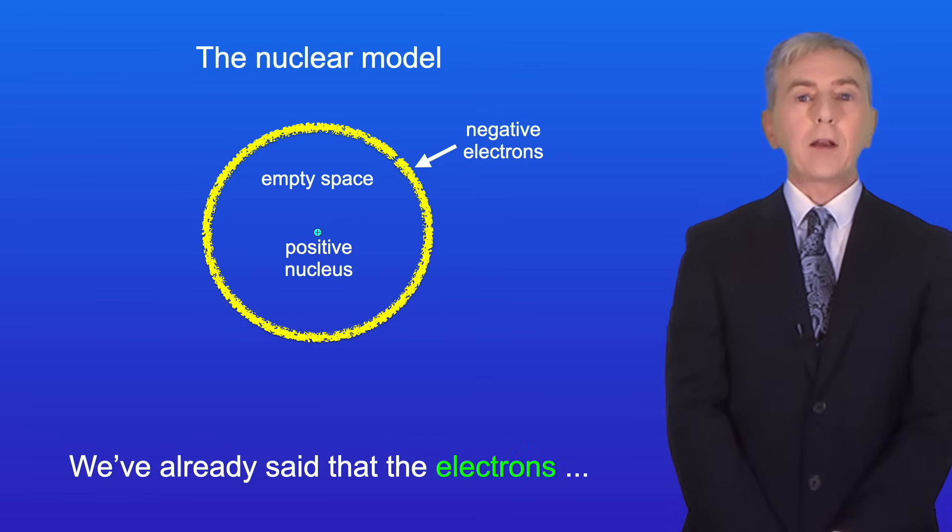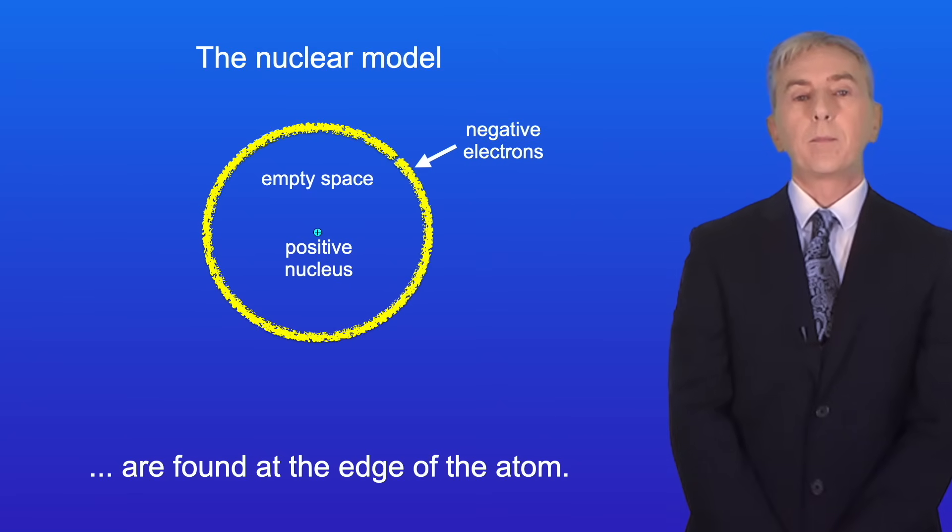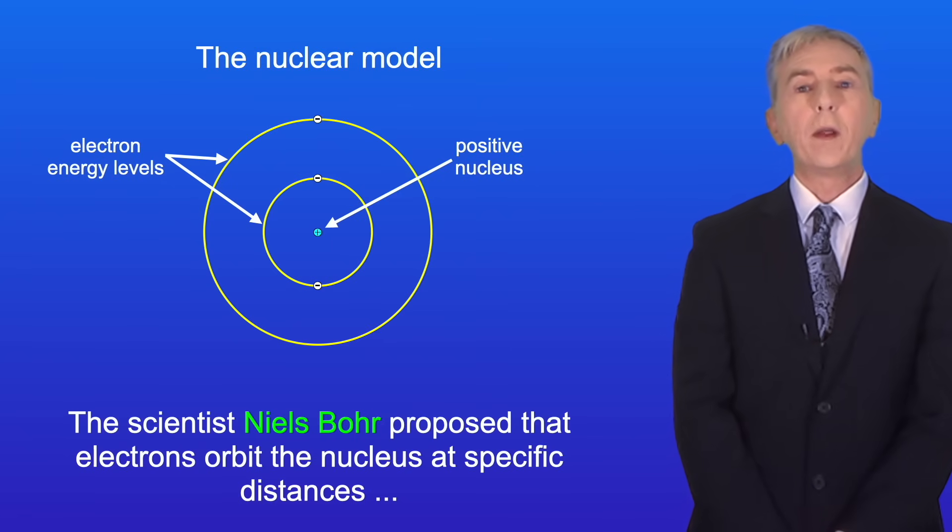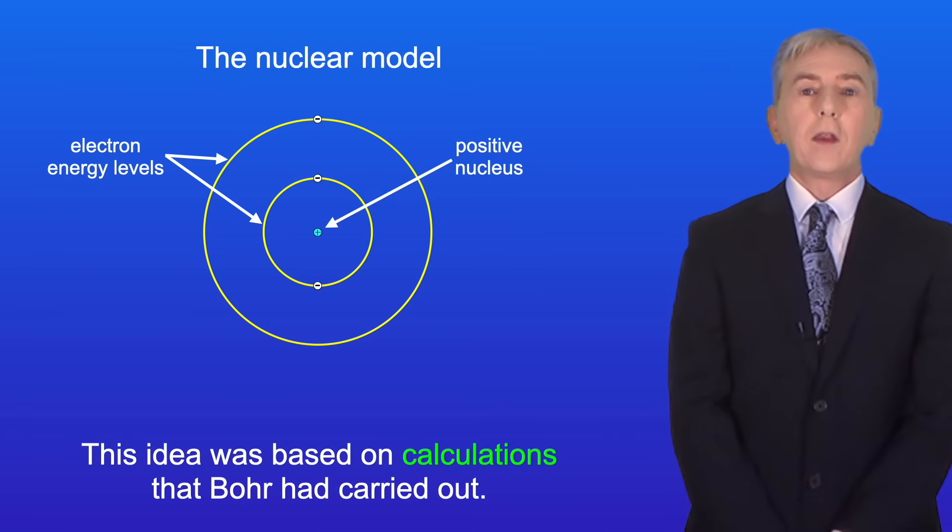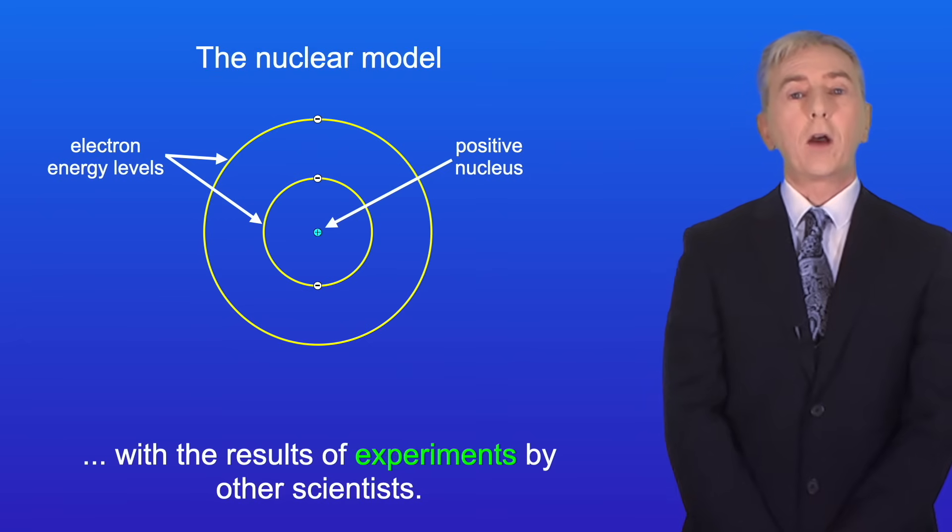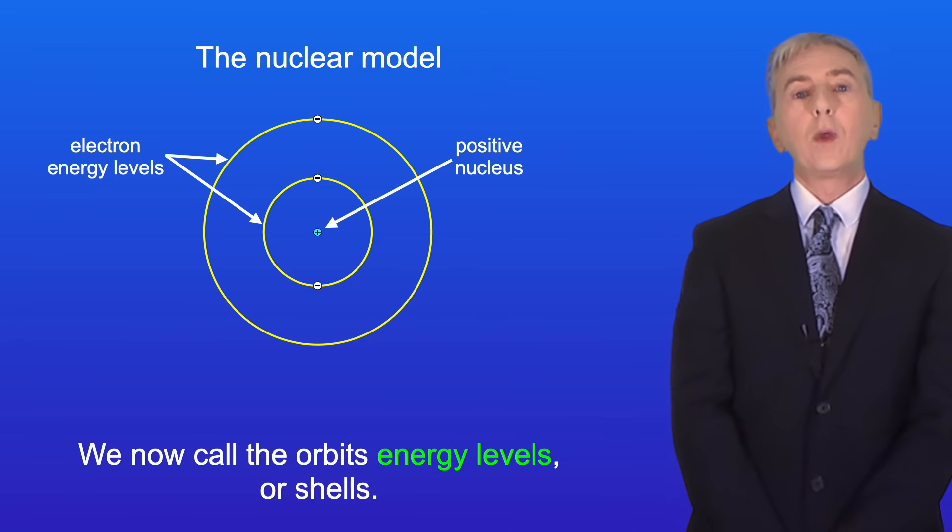Now we've already said that the electrons are found at the edge of the atom. The scientist Niels Bohr proposed that electrons orbit the nucleus at specific distances rather than just in a general area. This idea was based on calculations that Bohr had carried out. Bohr's proposal was accepted because it agreed with the results of experiments by other scientists. We now call the orbits energy levels or shells.